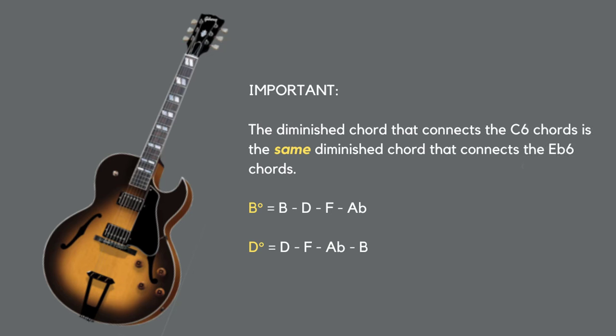The notes in a B diminished chord are B, D, F, A flat. The notes in a D diminished chord are D, F, A flat, B.